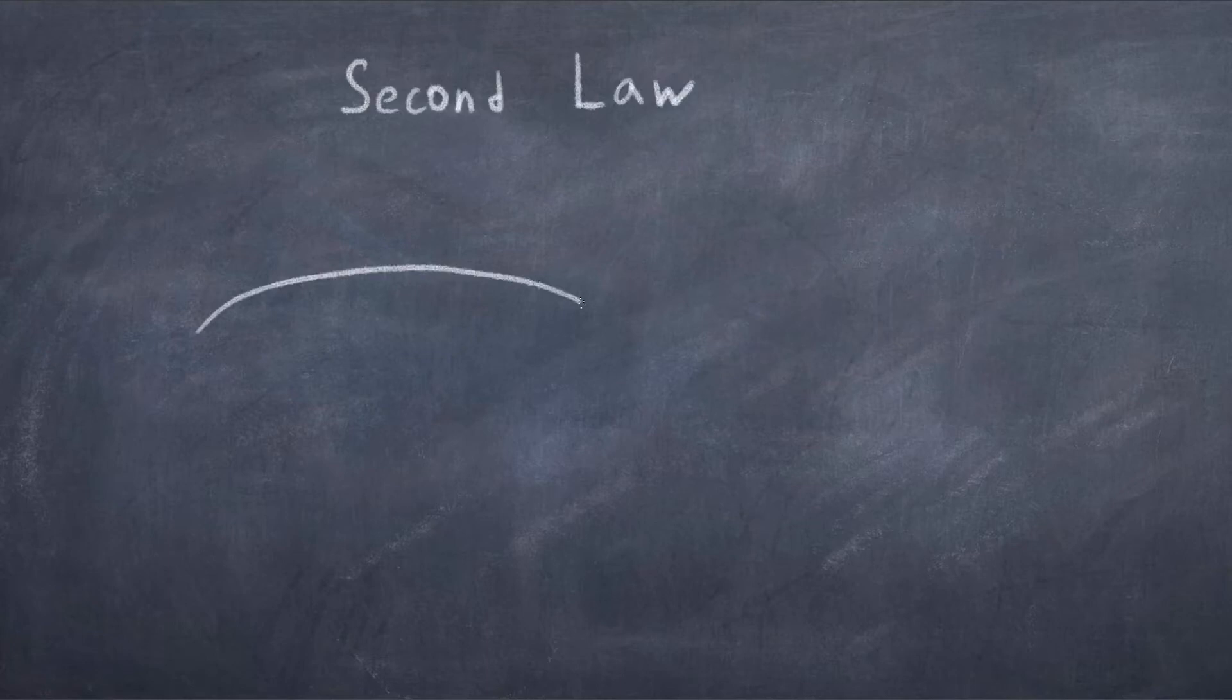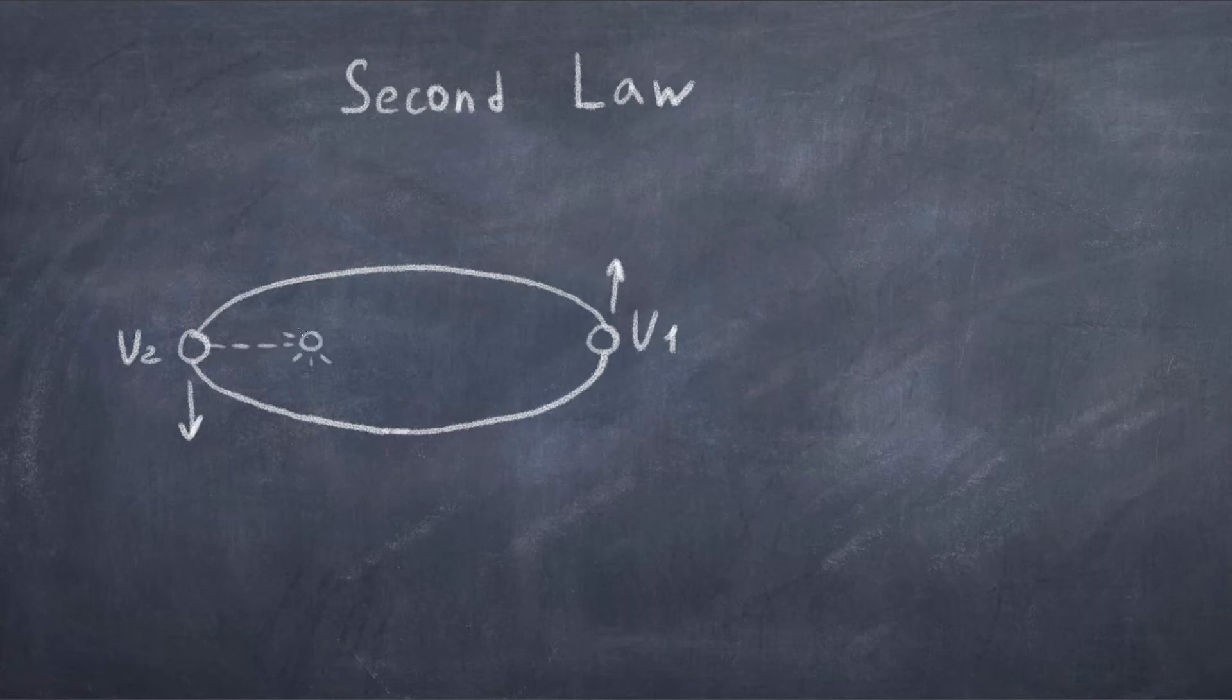The second law states, a line segment joining a planet and the sun sweeps out equal areas during equal time intervals. Now this is related to the fact that the bigger the radius, thus the farther the object is from the other object it's orbiting, the slower it moves.